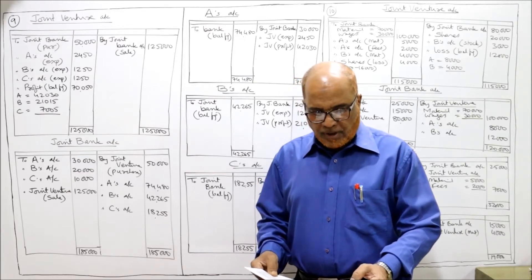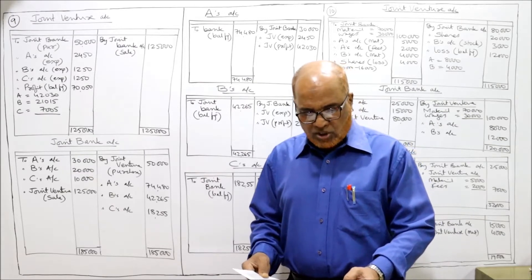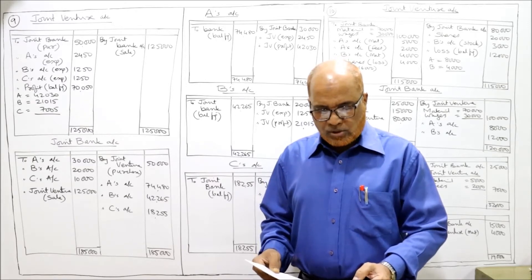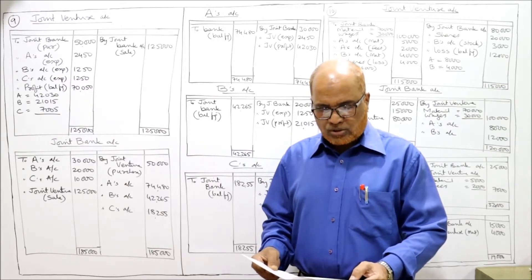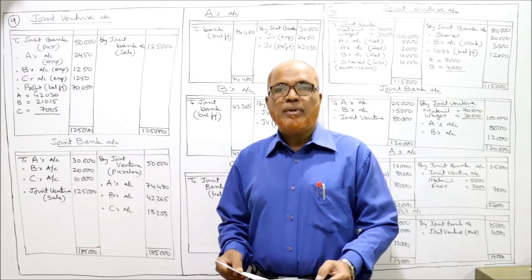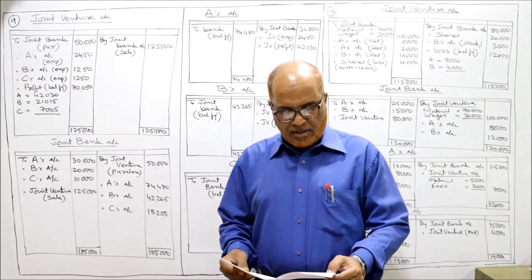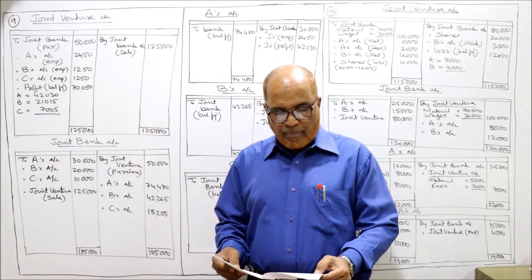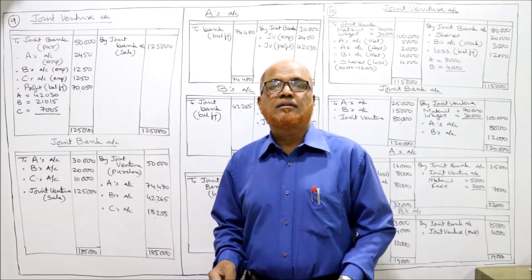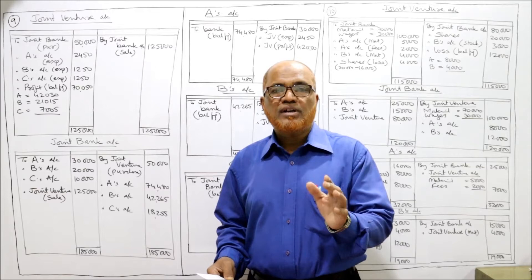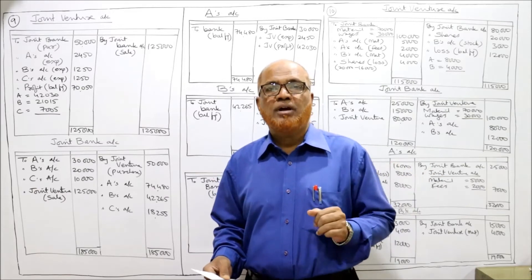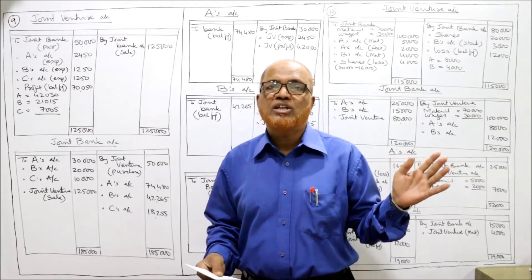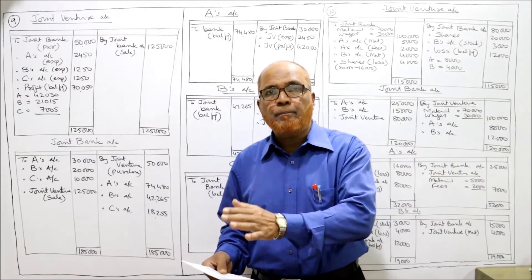They purchased by auction several new machines for Rs. 50,000. A contributing 30,000, B 20,000, C 10,000 - these are the contributions made by A, B and C in the venture. For carrying on the transactions relating to the venture, a joint bank account was opened. This is the first problem where a separate set of books are maintained - the accounts are not maintained by any of the co-venturer, they are maintained separately.